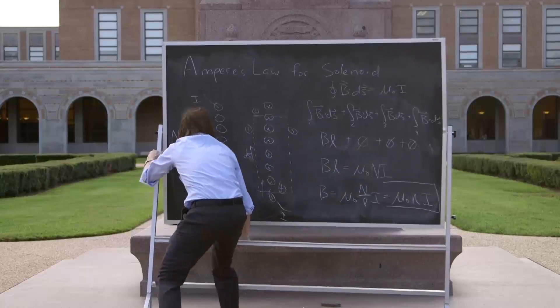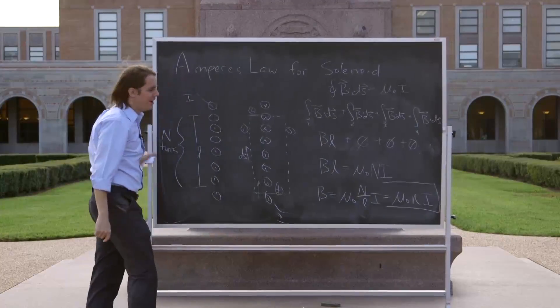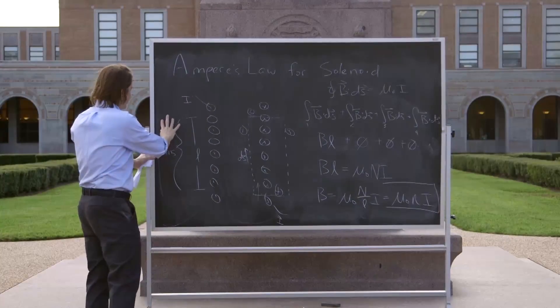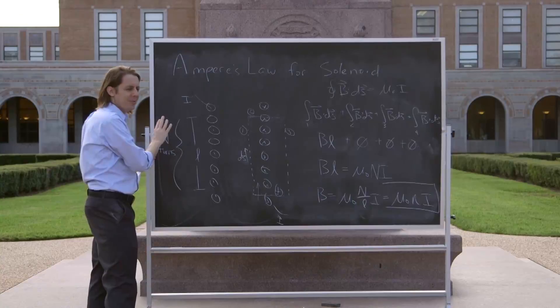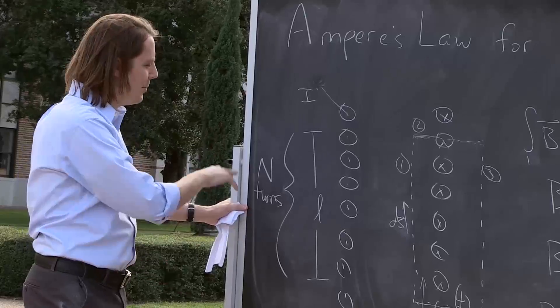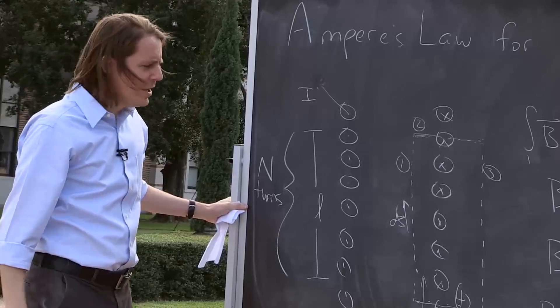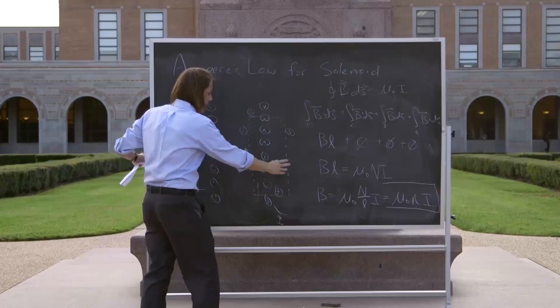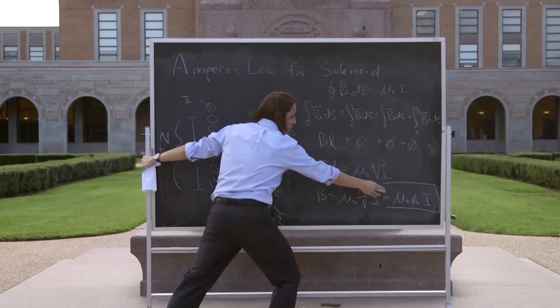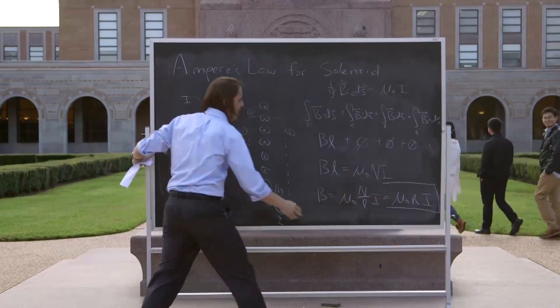Often in physics, we use the big capital letter to tell you the absolute number of something, and we use the little letter to tell you the number per unit length of something. So what this tells us though, the interesting part, is that we have a number for the B field now. Mu naught times the number of turns per unit length times I.